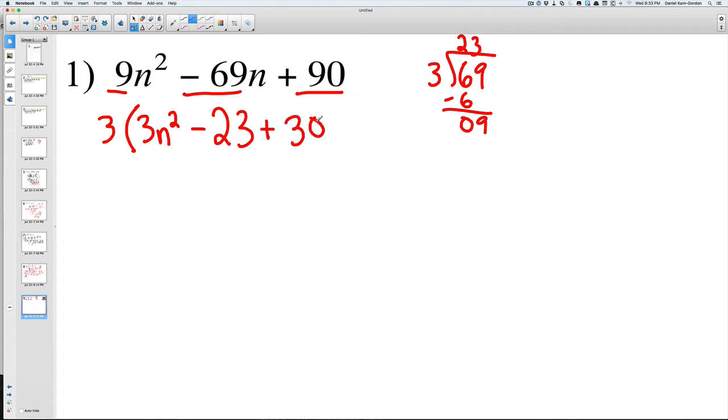And then 90 divided by 3 is 30, so it's going to be 30. So now we have this 3n squared, this 23, and this 30. However, to figure it out, it's going to be 3n times something and n times something, but we don't know exactly what's going to be inside here when we fully factor this.